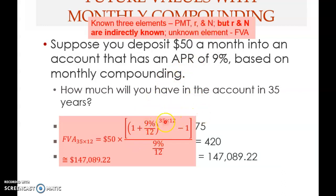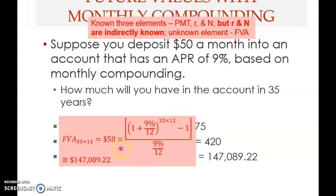The unknown element is the future value of annuity. Using the formula: $50 multiplied by [(1 + r)^N − 1] divided by r, where r = 9% ÷ 12 and N = 35 × 12 = 420. The result is $147,089.22.